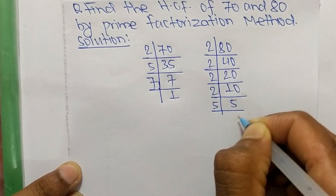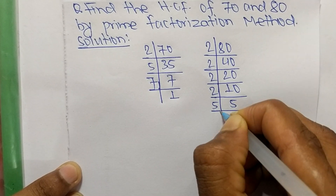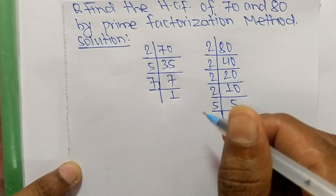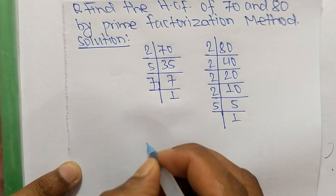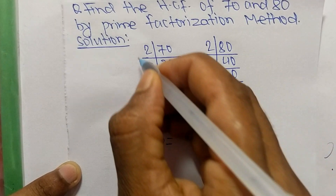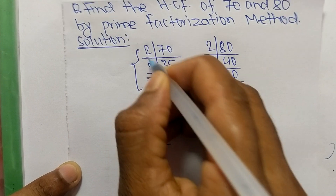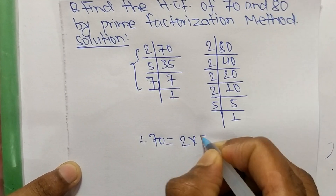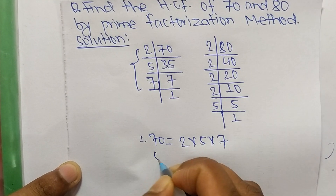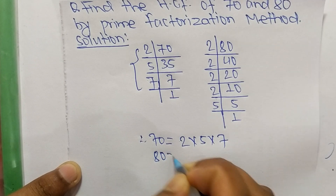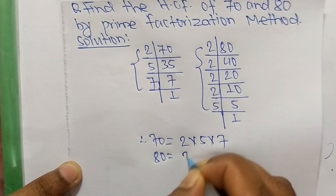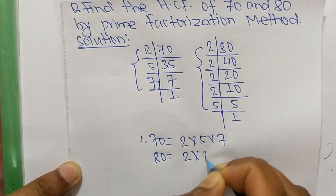From these prime factors we can write: 70 is equal to 2 times 5 times 7, and 80 is equal to 2 times 2 times 2 times 2 times 5.